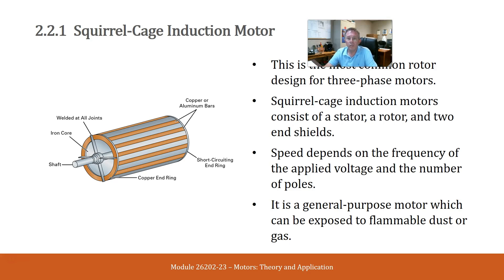Squirrel cage induction motor. This is the most common rotor design for three-phase motors. Squirrel cage induction motors consist of a stator, a rotor, and two end shields. Speed depends on the frequency of the applied voltage and the number of poles. It is a general purpose motor which can be exposed to flammable dust or gas.